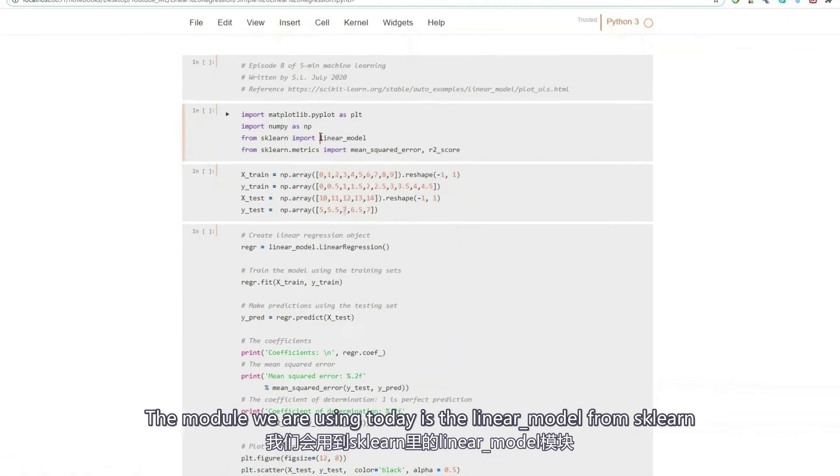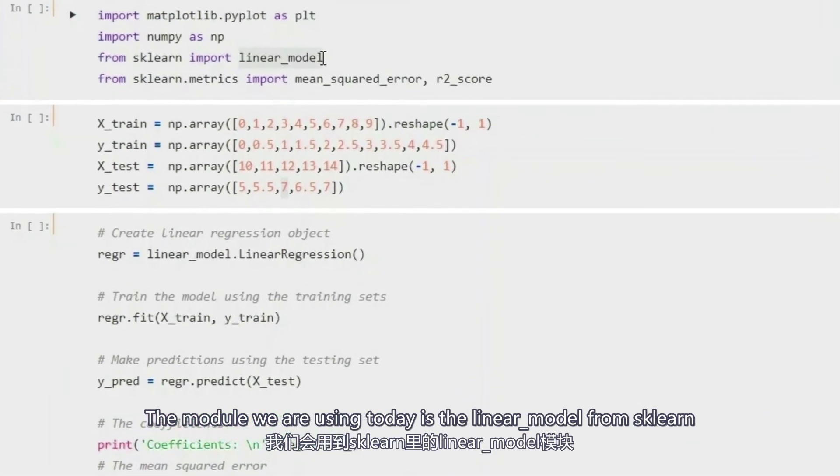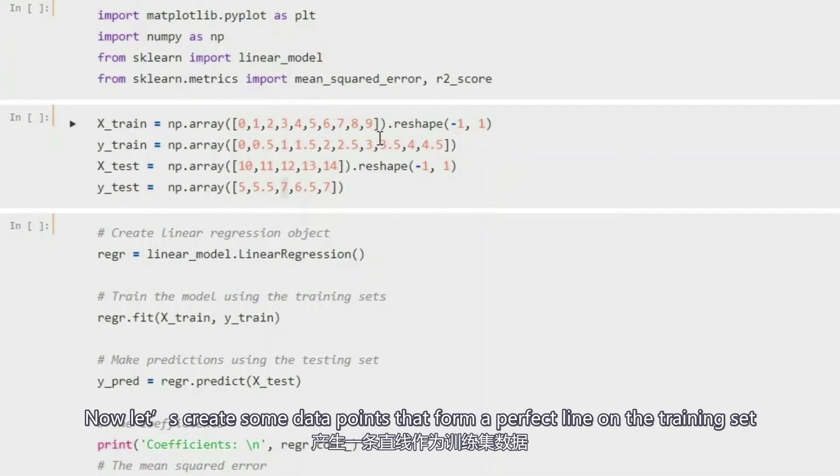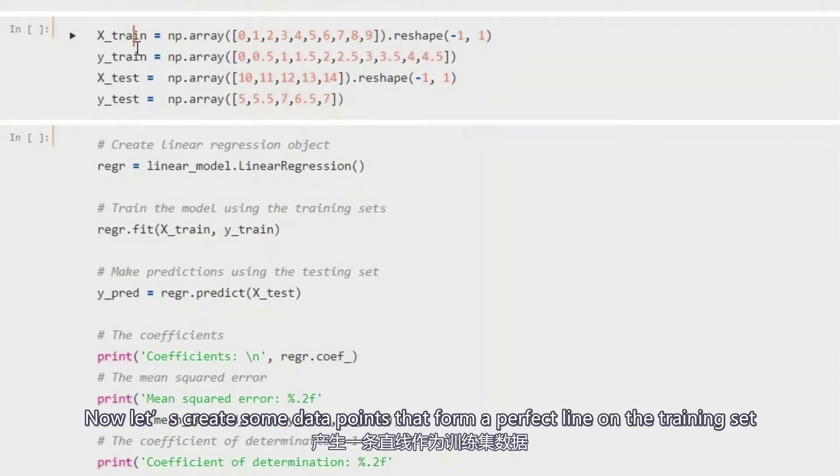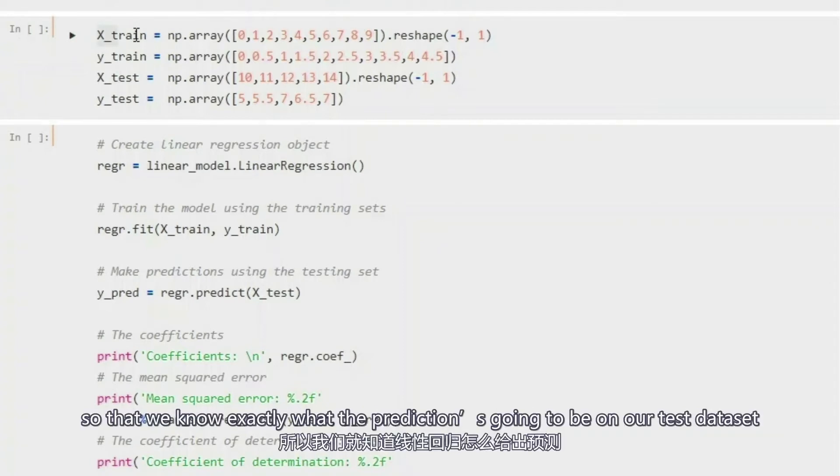Alright, the module we're going to use today is the linear model module from sklearn. Let's bring that. Now let's create some data points that form a perfect line on the training set so that we know exactly how the prediction is going to be on the test data set.